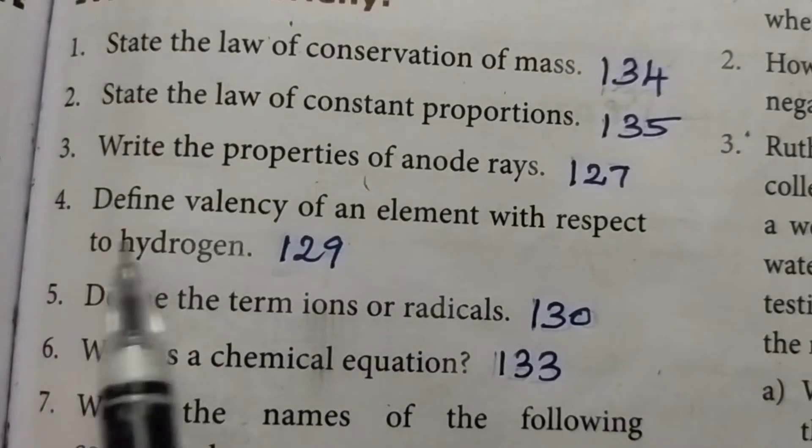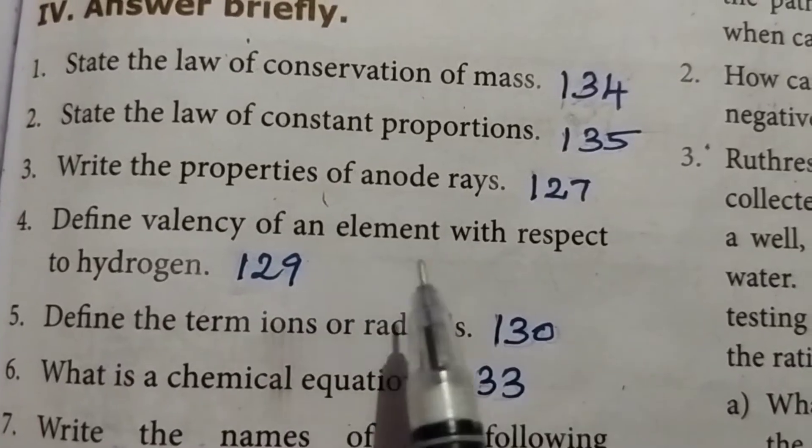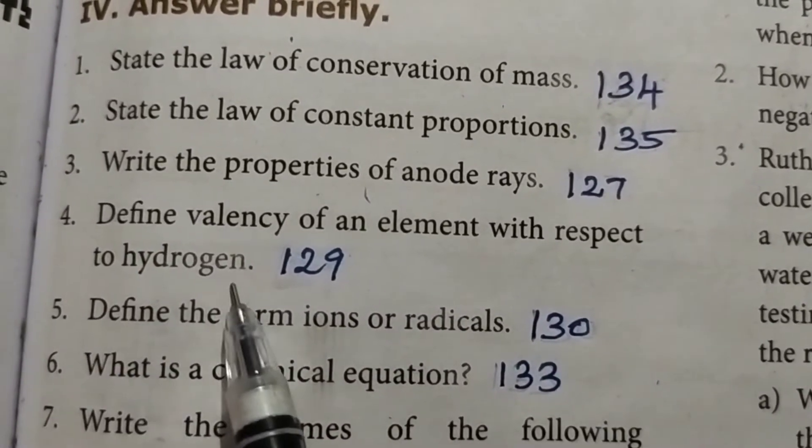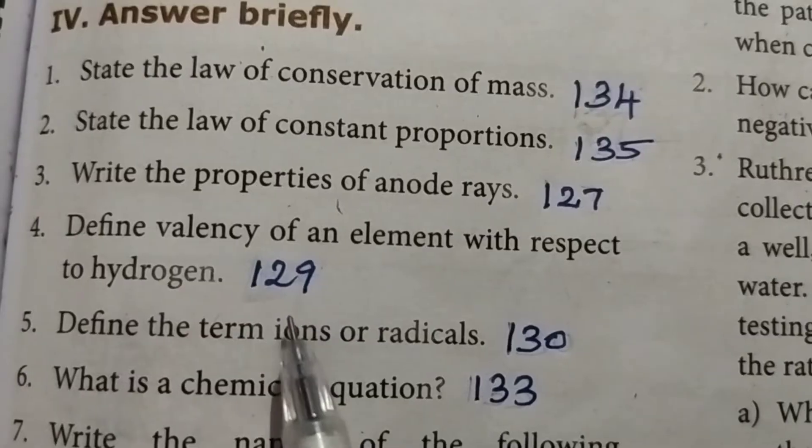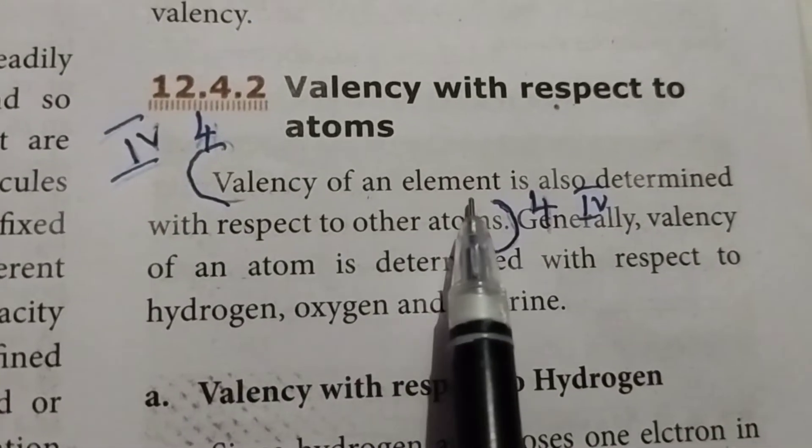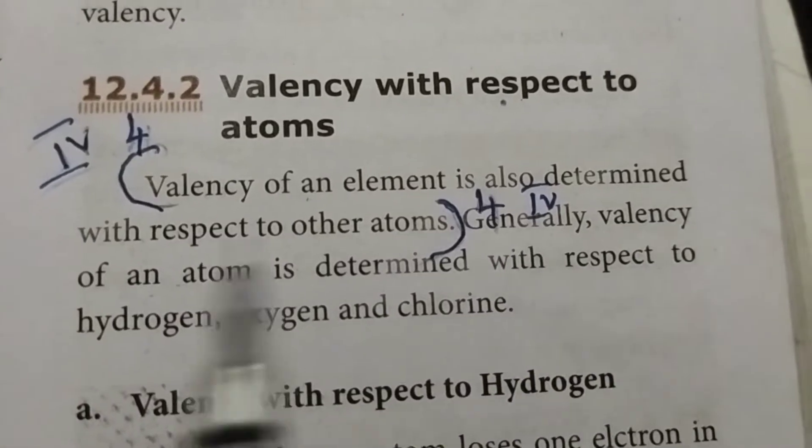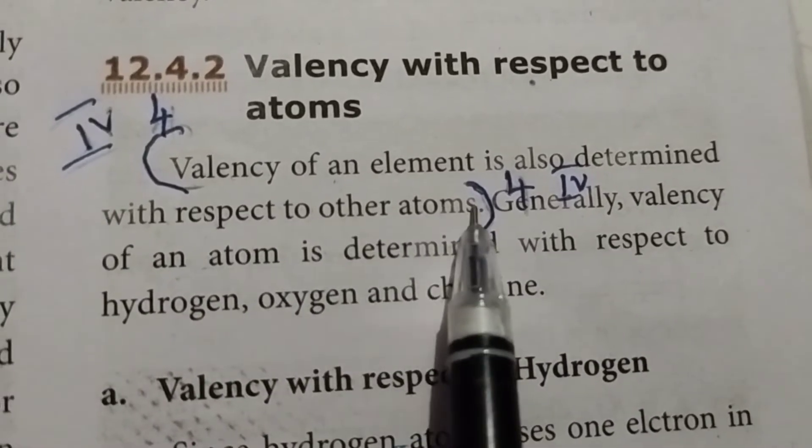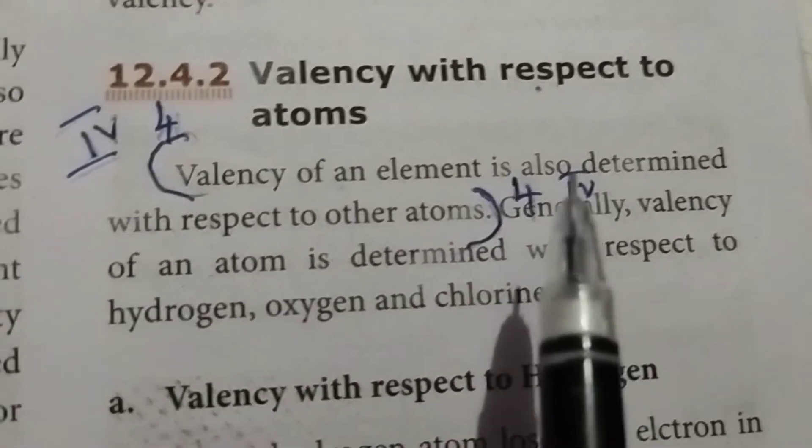Fourth question: define valency of an element with respect to hydrogen. Take page number 129. Valency of an element is also determined with respect to other atoms. Fourth Roman letter, fourth question answer.